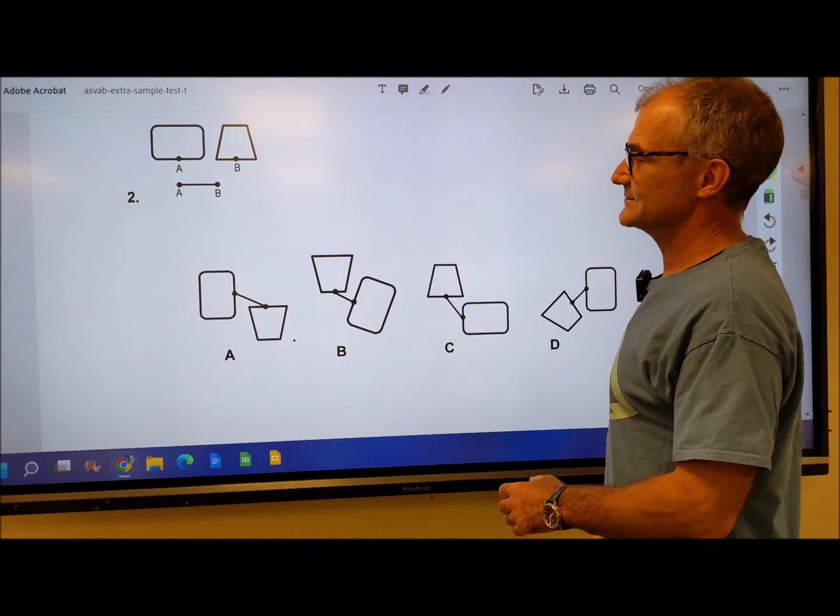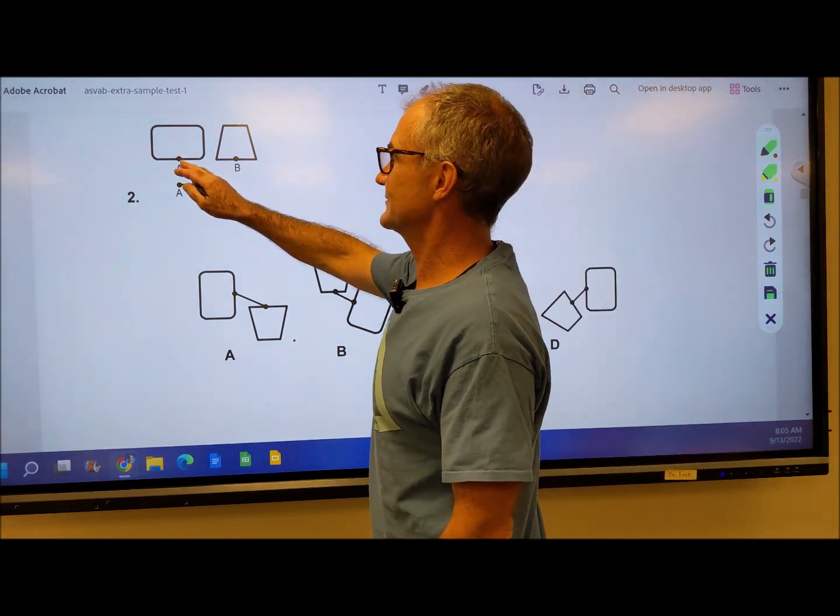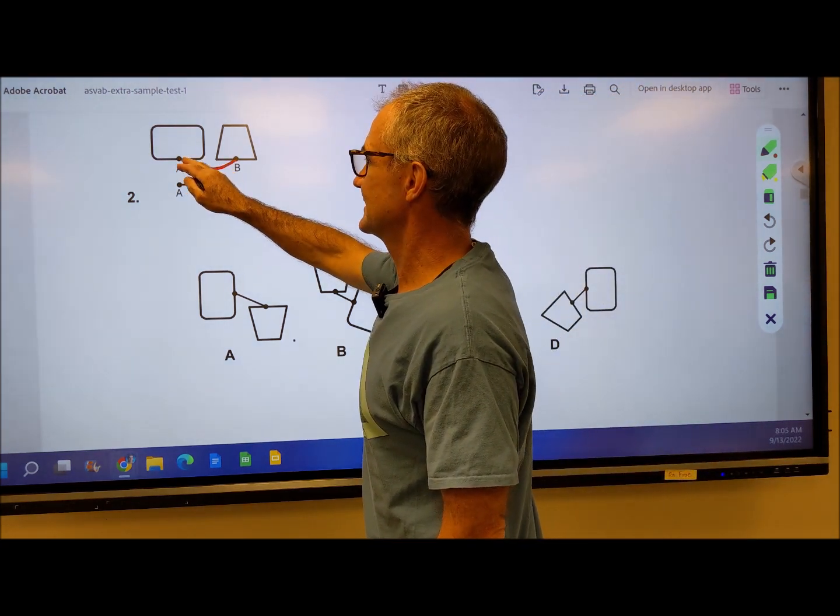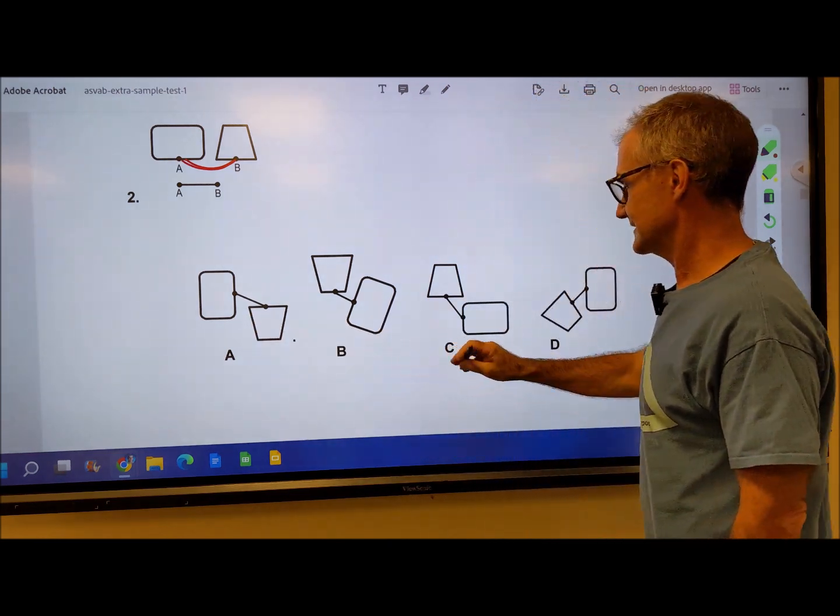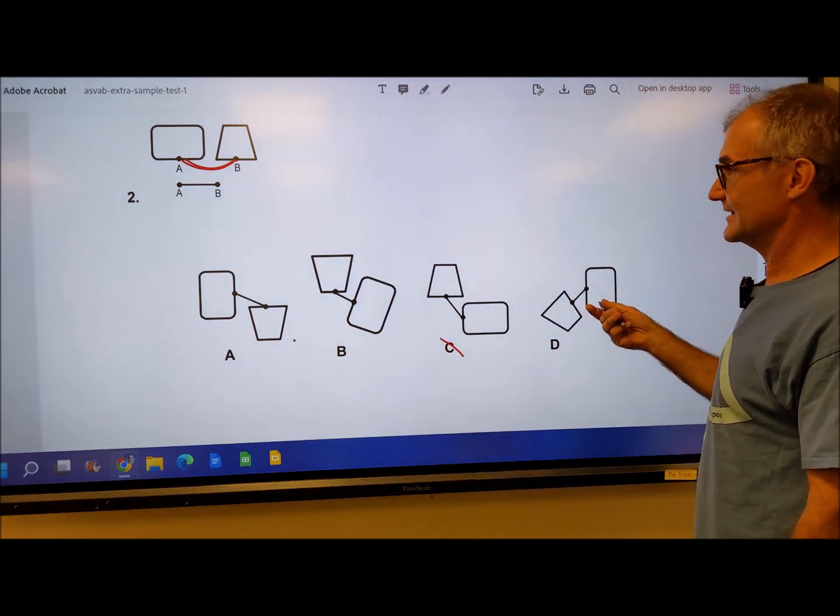Number two, same thing. I'm going to attach this line segment from A to B. It's a straight line on the long side of the rectangle, so like that or like that, not like that or that. So that works.